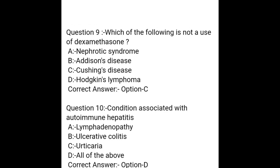Question 9. Which of the following is not a use of dexamethasone? A. Nephrotic syndrome, B. Addison's disease, C. Cushing's disease, D. Hodgkin's lymphoma. Correct answer: Option C — Cushing's disease.